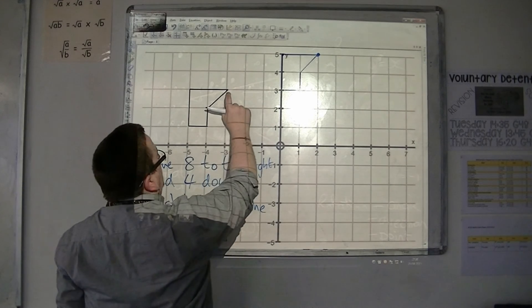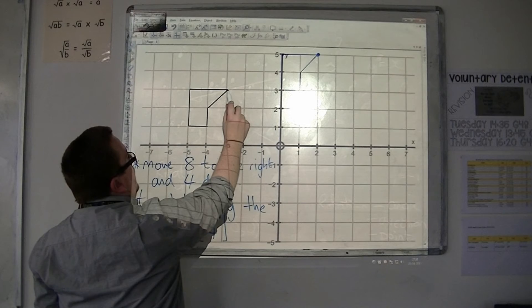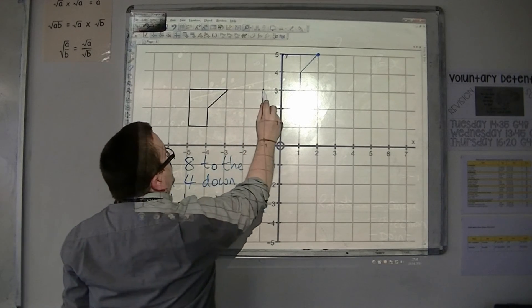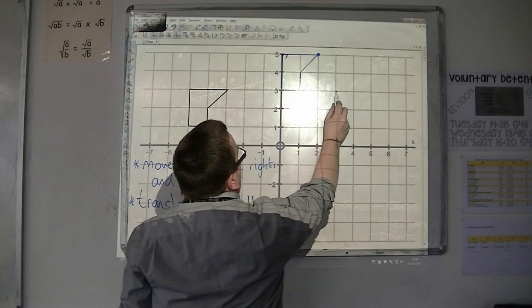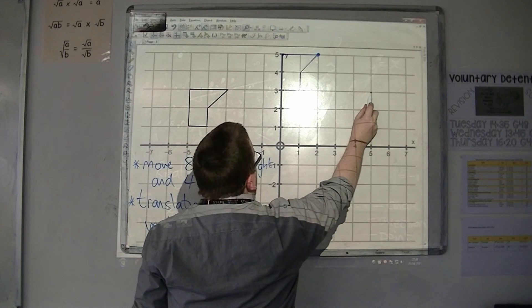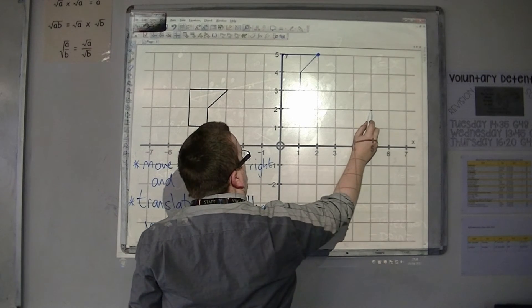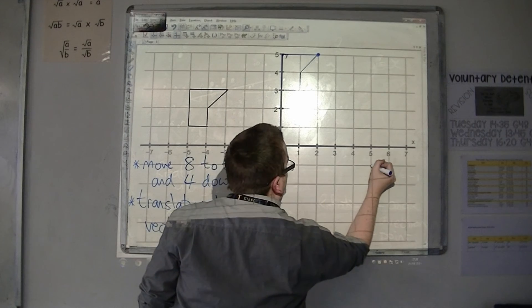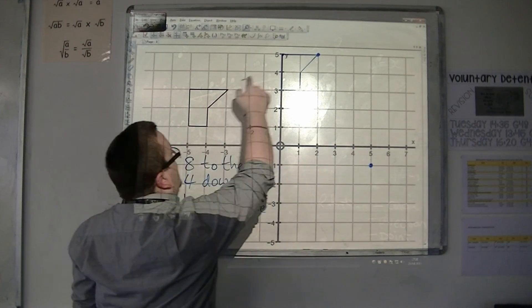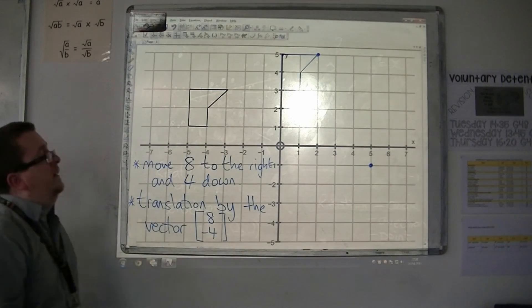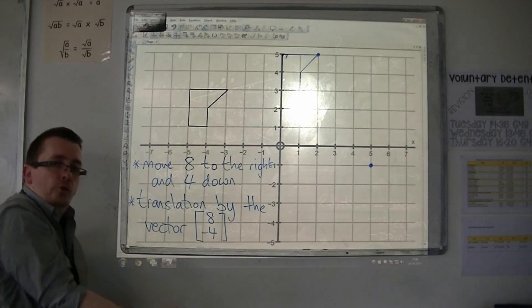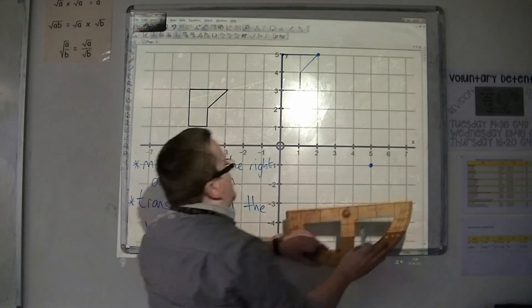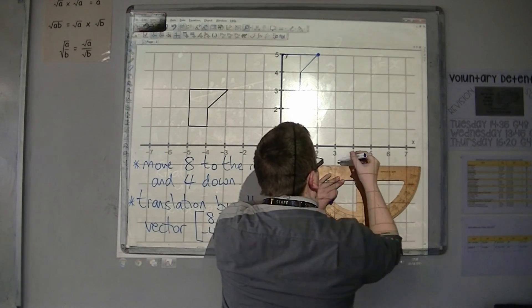So I take one of the corners, I'm going to take this one again, go one, two, three, four, five, six, seven, eight. And then I'm going four down, so one, two, three, four. So this point has moved all the way over to here. Eight to the right, and four down. And I just redraw the shape from that point.